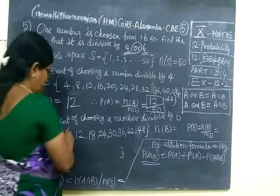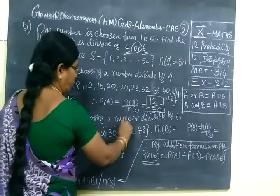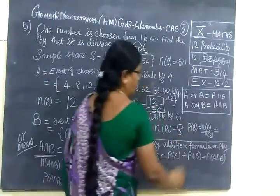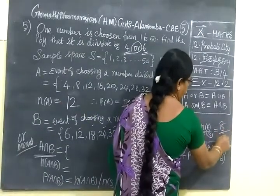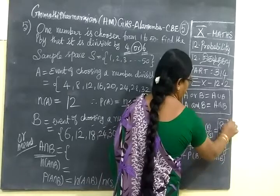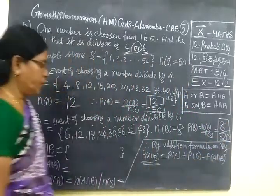Now N of B, 1, 2, 3, 4, 5, 6, 7, 8. So 8. Therefore P of B, N of B by N of S. In the box go to the next step.